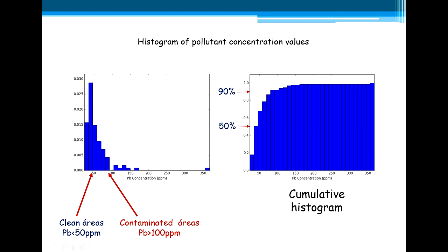If we go to the cumulative histogram, you can take straight away the proportion of those two classes. Lower than 50 ppm, we have, I would say, 50 percent. And if the samples are representative of the contaminated site, we can say that we probably have 50 percent of this area is clean, does not need any remediation.